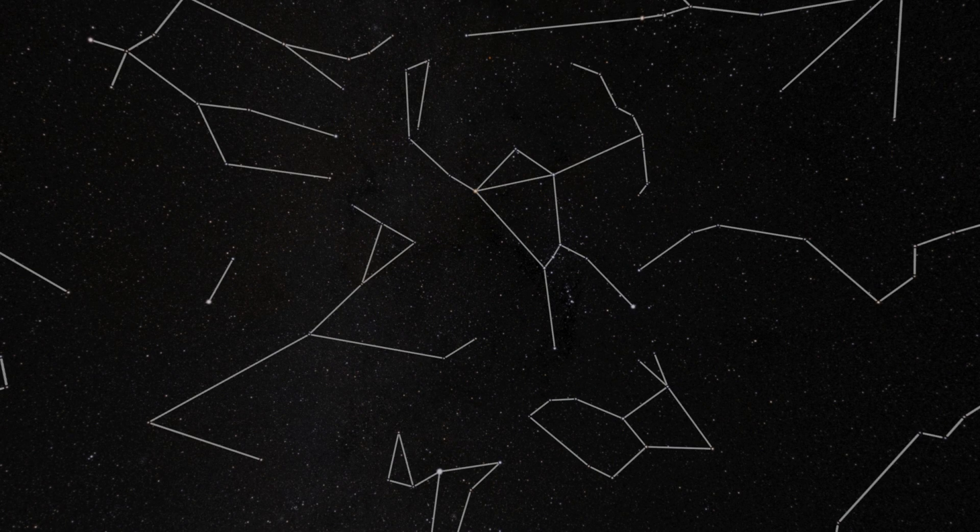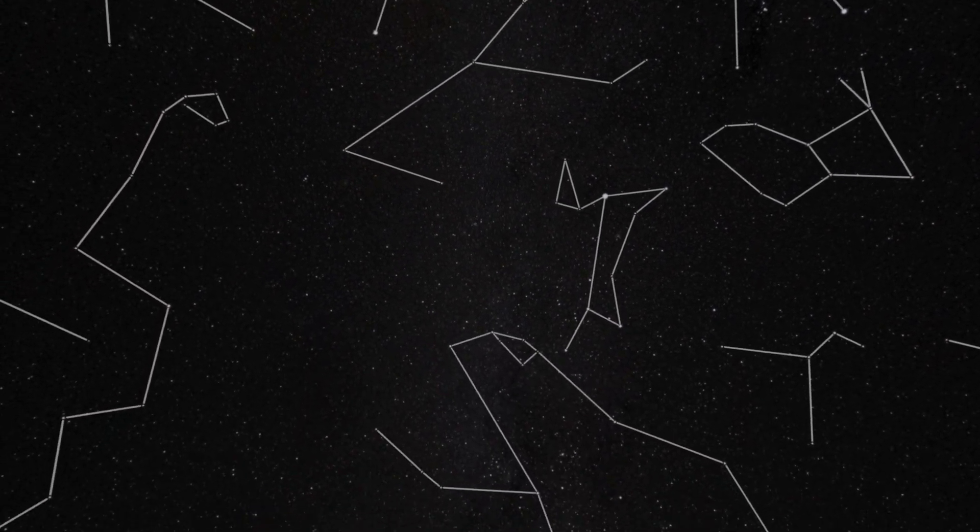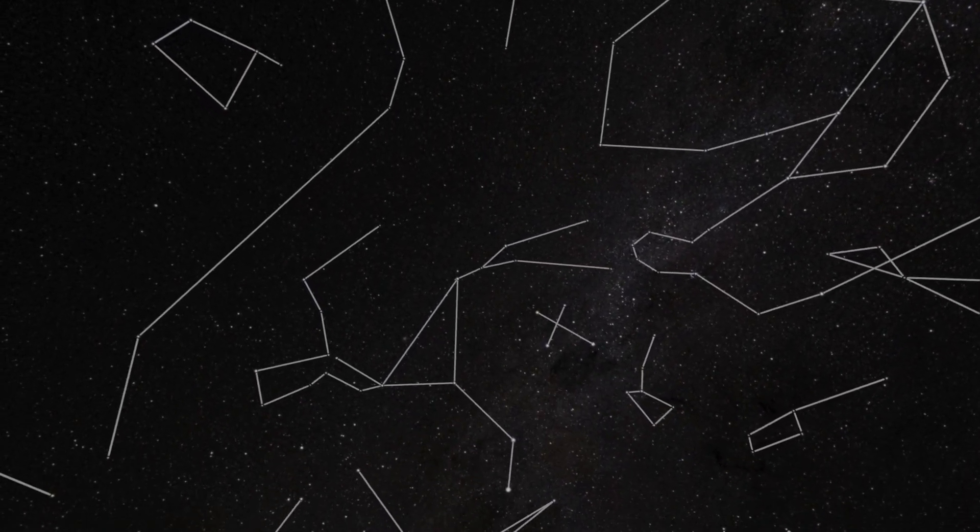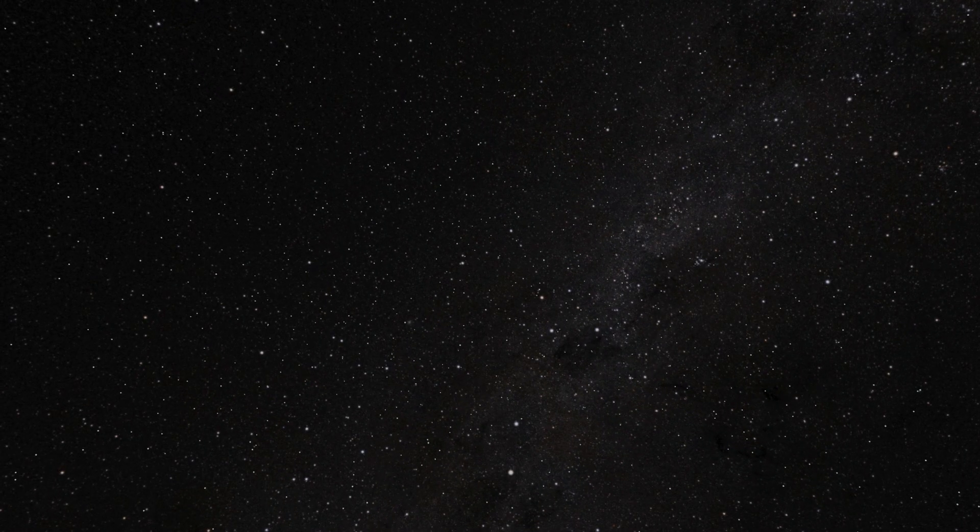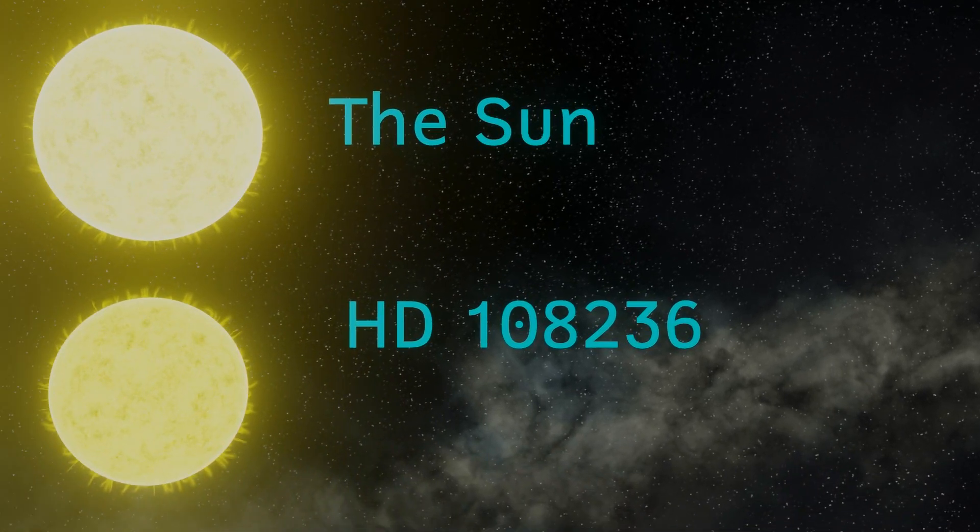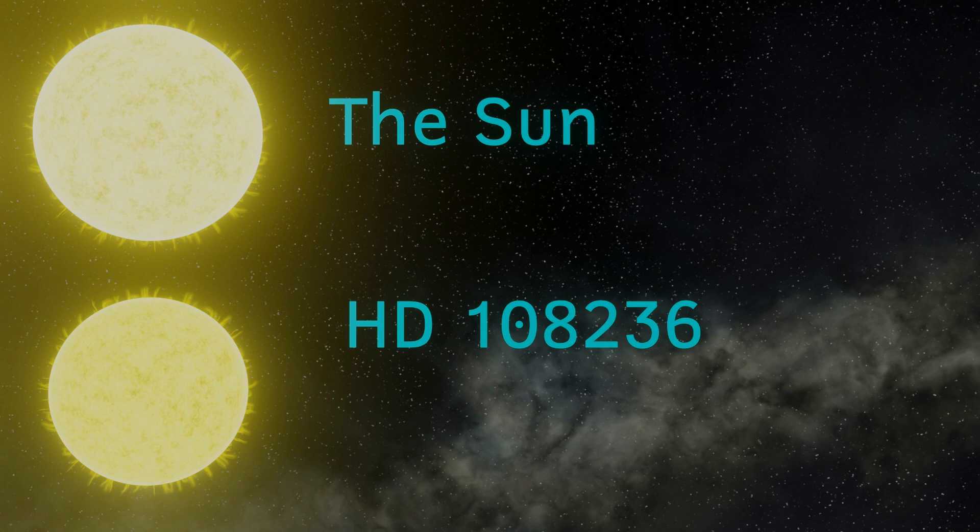Lying 210 light years away in the constellation of Centaurus, we find the star which doesn't seem to have a proper name, just the designation HD108236. This is a G-type star, the same spectral class that our own sun belongs to, and this star has about 87% the mass and radius of our sun.